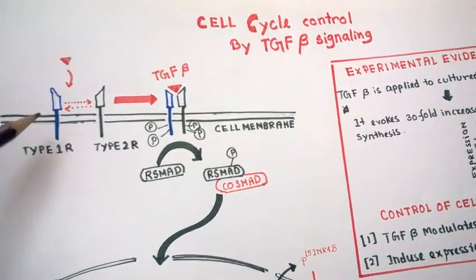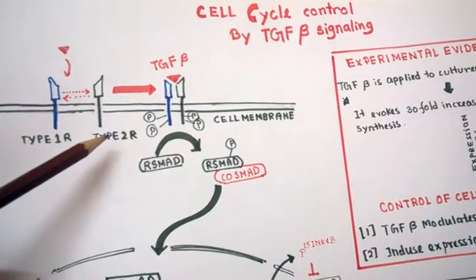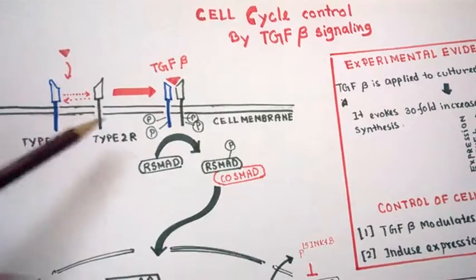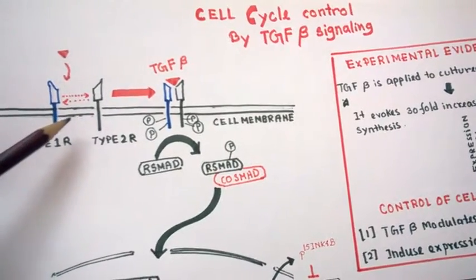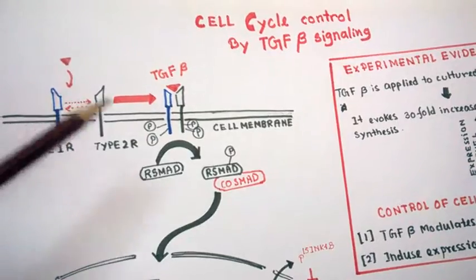This ligand binds to two types of receptors: type 1 receptor and type 2 receptors. Upon ligand binding, there is heterodimerization of these receptors, and this heterodimerization event is very important for the initiation of TGF beta mediated signals.